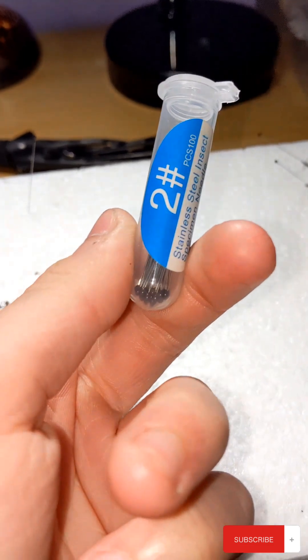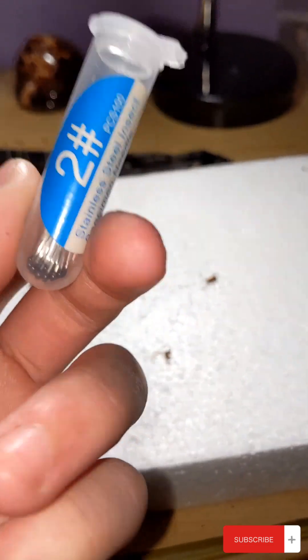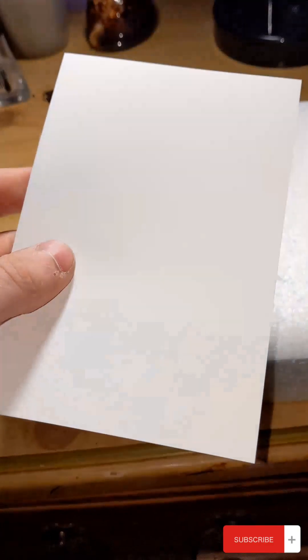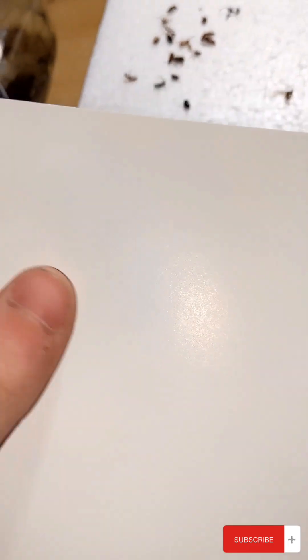You'll need a number two or number three pin. It'll easily go through the paper. So photo paper or card stock will work for your paper. I have a little piece of photo paper here. If you don't want to use the shiny side, I just use the more matte side.